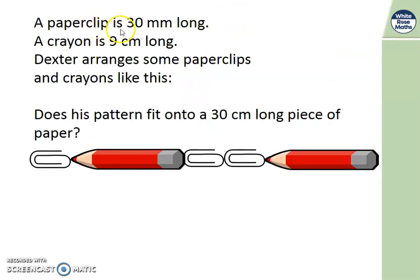Let's have a look at this one. A paperclip is 30 millimetres long. A crayon is 9 centimetres long. Dexter arranges some paperclips and crayons like this. Paperclip, crayon. Paperclip, paperclip, crayon. Does his pattern fit onto a 30 centimetre long piece of paper? We've got some maths to do here. Can you work out what it is? Well, let's put the measurements onto our drawing. Paperclip is 30 millimetres. And the crayon is 9 centimetres. And we record it next to each one. Then I can work out what I need to add together. Can you spot what I need to do first though?